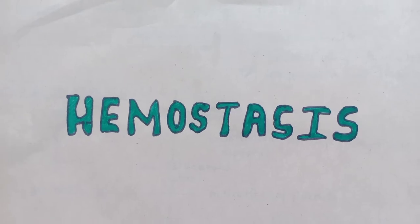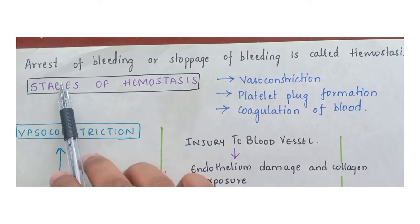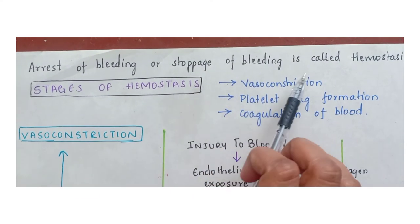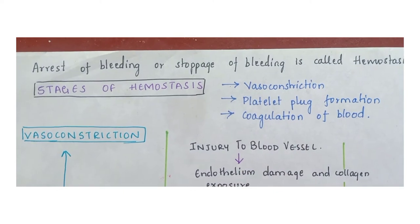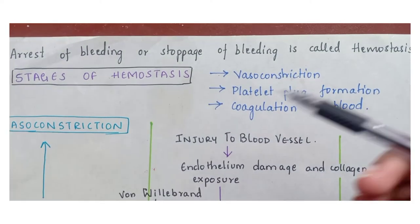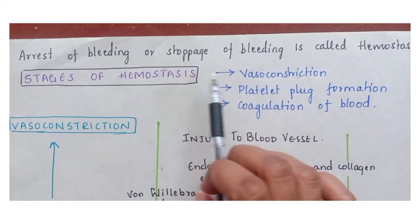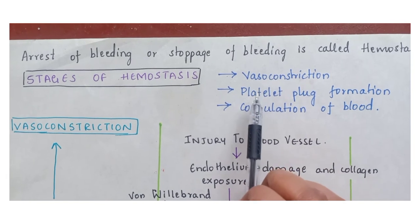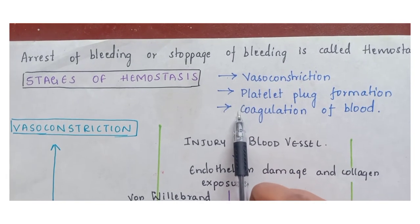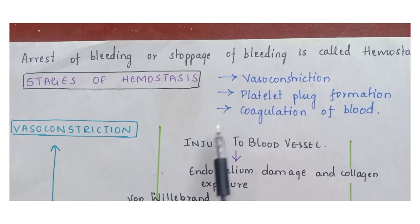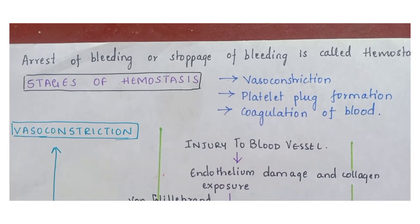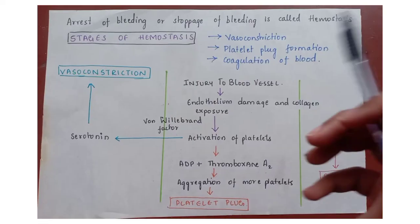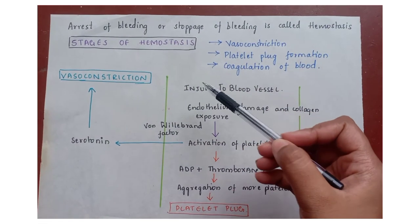Hemostasis — the arrest or stoppage of bleeding is called hemostasis. There are 3 stages of hemostasis: the first one is vasoconstriction, the second is platelet plug formation, and the third is coagulation. These are the 3 stages.